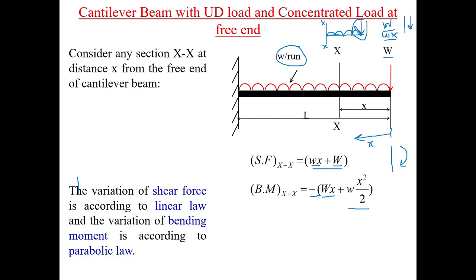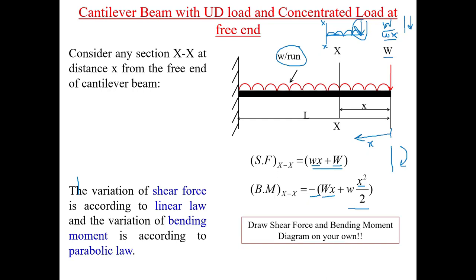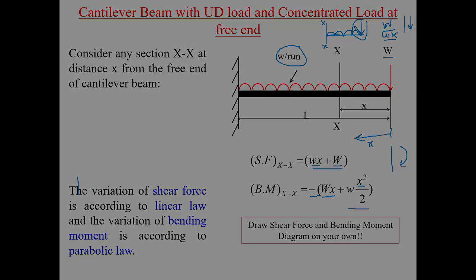For the bending moment, we have contributions from both loads: minus Wx from the point load, and minus wx²/2 from the UDL, giving total bending moment = minus(Wx + wx²/2). The shear force follows a linear path (superposition of constant and linear terms) and the bending moment follows a parabolic path. Drawing these diagrams is left as an assignment — follow the appropriate sign conventions.